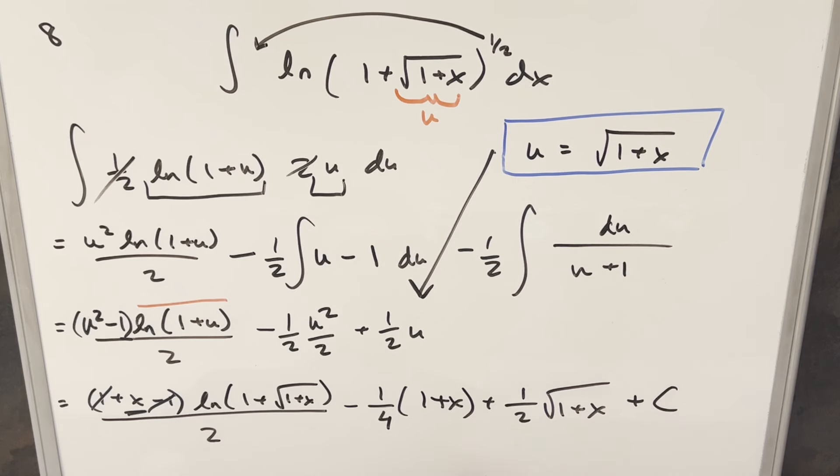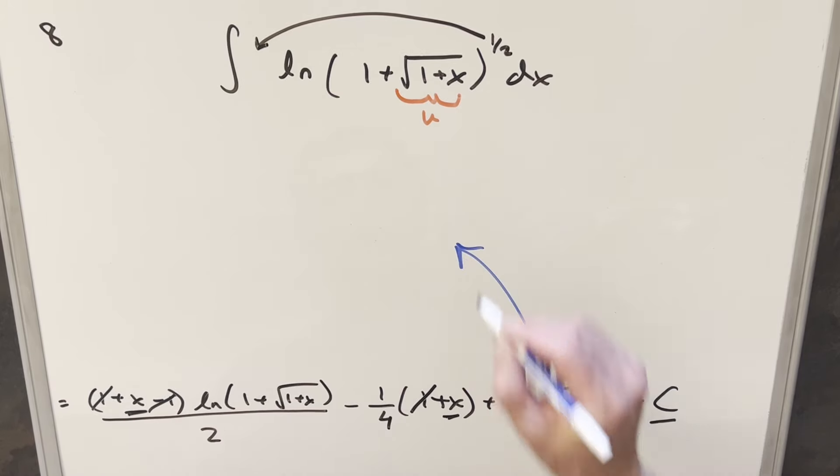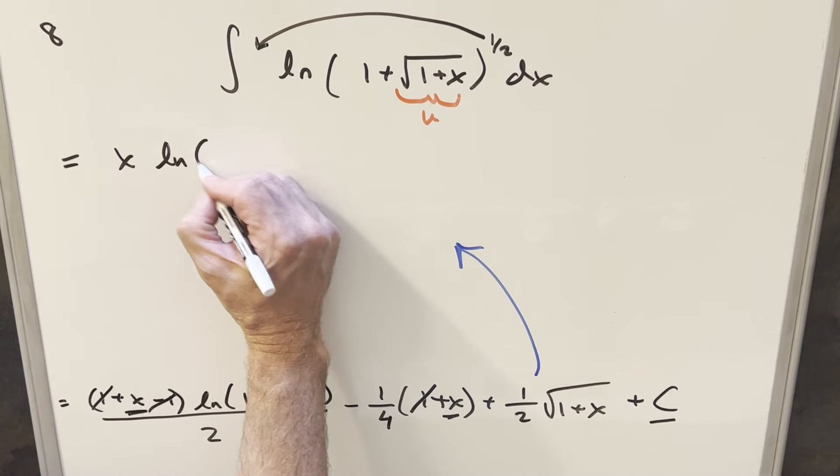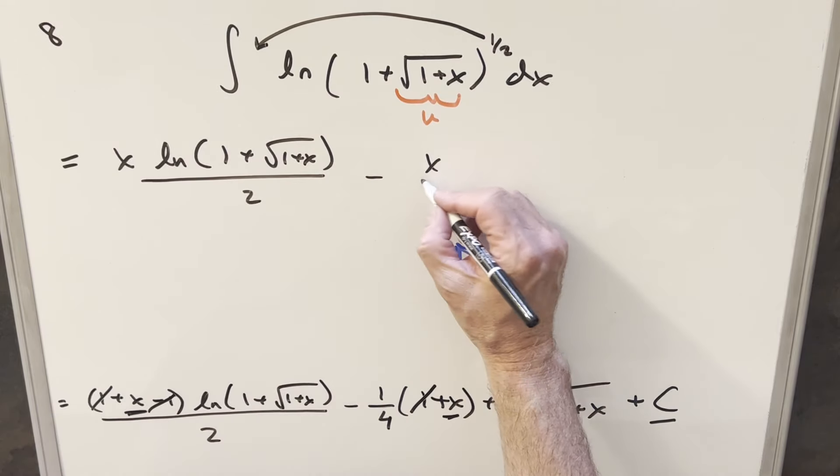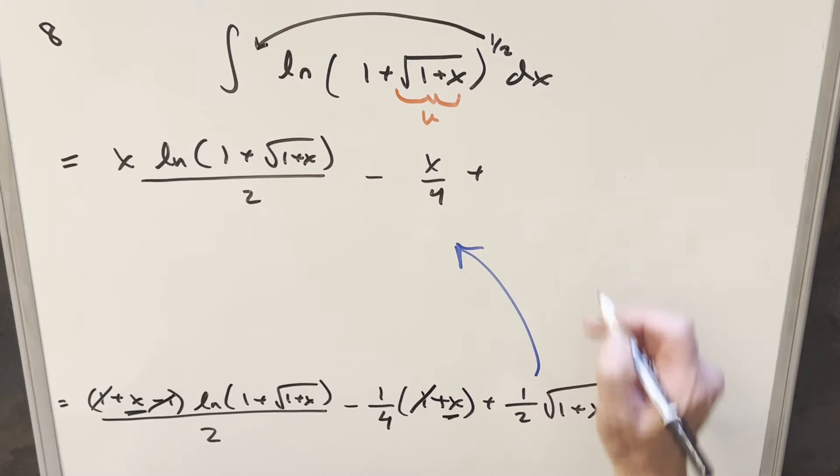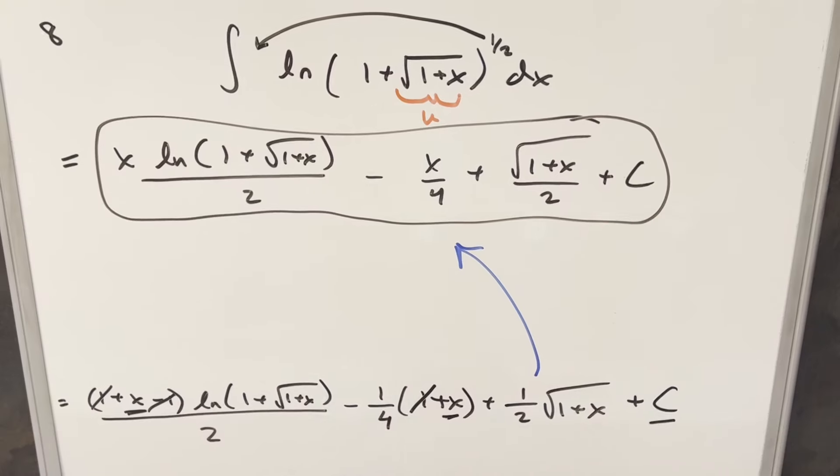Then, now of course we have a plus c on the end of this. If you distribute in minus 1, if you distribute in the minus 1 fourth to the 1, that's just minus 1 fourth. That's just going to be a constant. That's going to get absorbed here. So, let's just get rid of that 1 right there, which doesn't do anything. This will just be an x. And since I'm basically out of space, let's just bring the final solution up into this area right here. So, what we're going to have left for our solution is going to be x natural log 1 plus square root 1 plus x all over 2 minus x over 4 plus square root 1 plus x over 2, add a plus c, and that's it. Okay, there it is. Good one from SwinBee 2023. Thanks everyone for watching. Have a good day.